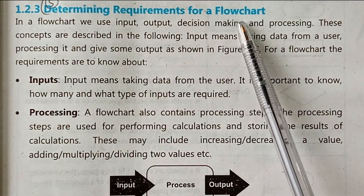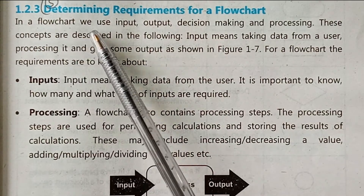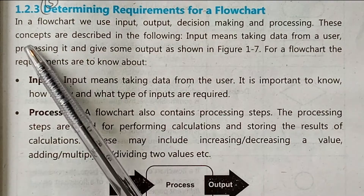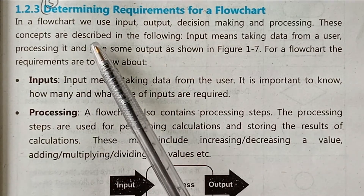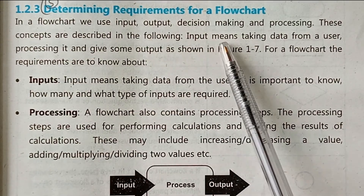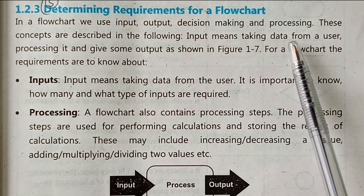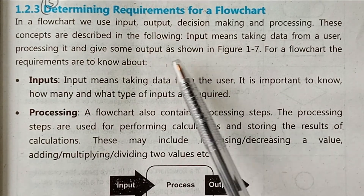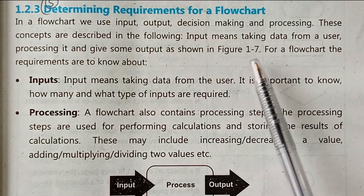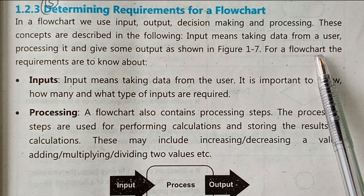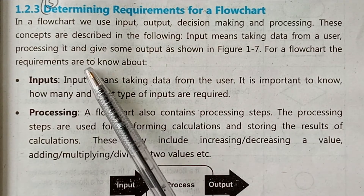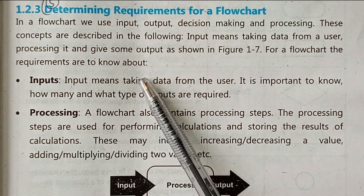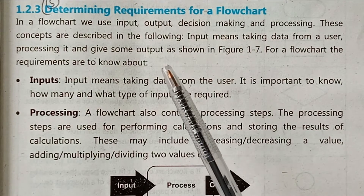In a flowchart we use input, output, decision making, and processing. Input means taking data from a user, processing it, and giving some output, as shown in figure 1.7. For a flowchart, the requirements involve four steps that include input, output, decision making, and processing.